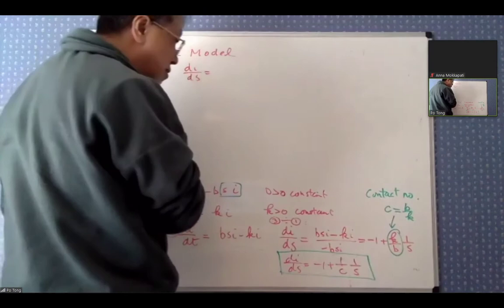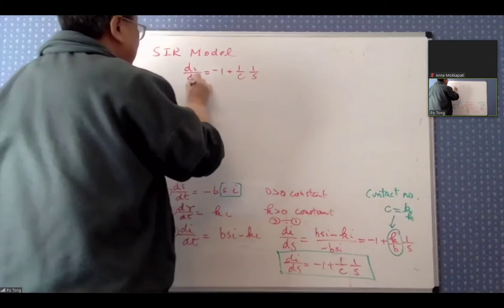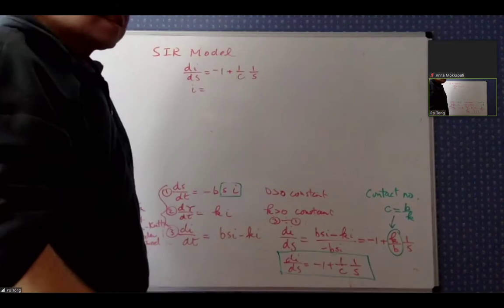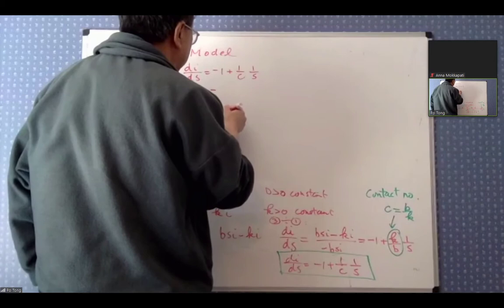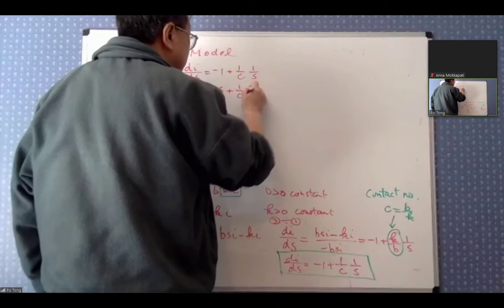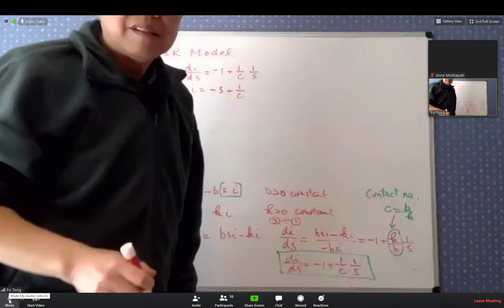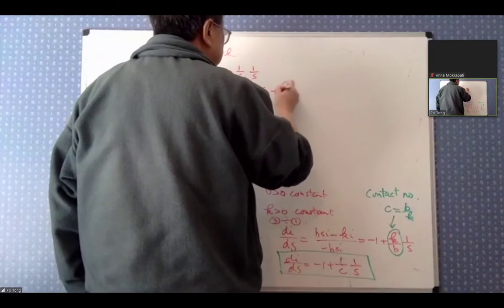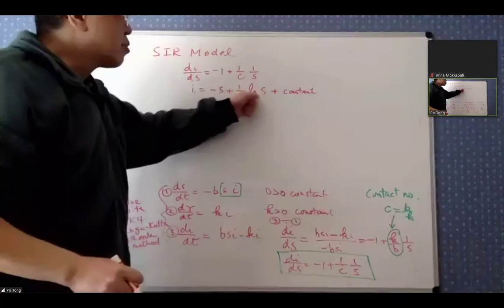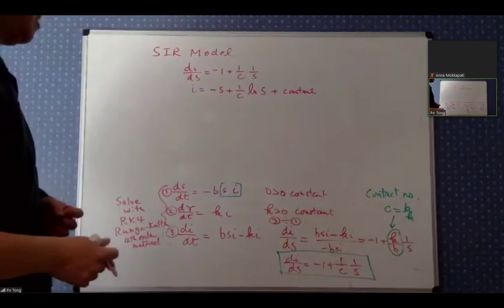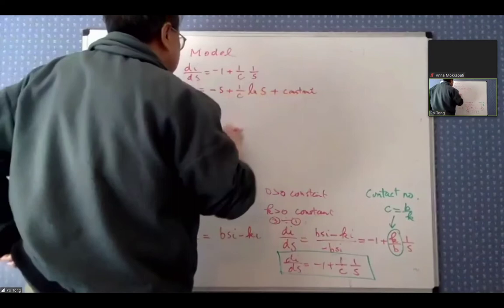Integrating di/ds equals minus 1 plus (1/c)·(1/s) with respect to s gives: i equals minus s plus (1/c)·ln(s) plus a constant. This equation relates s and i with no t — the time variable is gone.